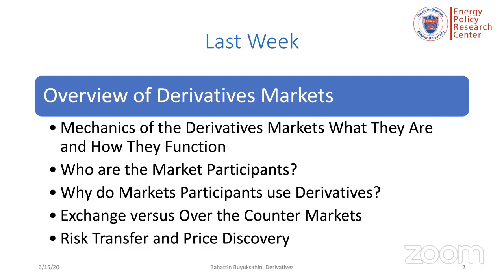Then we moved to the topic of where these instruments are traded. There are basically two venues in which derivatives contracts trade: exchanges and over-the-counter markets. Exchange-traded derivatives are fully standardized, and their contract terms are designed by derivatives exchanges. Instruments in OTC markets are generally privately negotiated between market makers and their clients — they are not standardized and are custom-made to fit clients' needs. Finally, we discussed two of the most important functions of derivatives markets: the transfer of risk and price discovery.